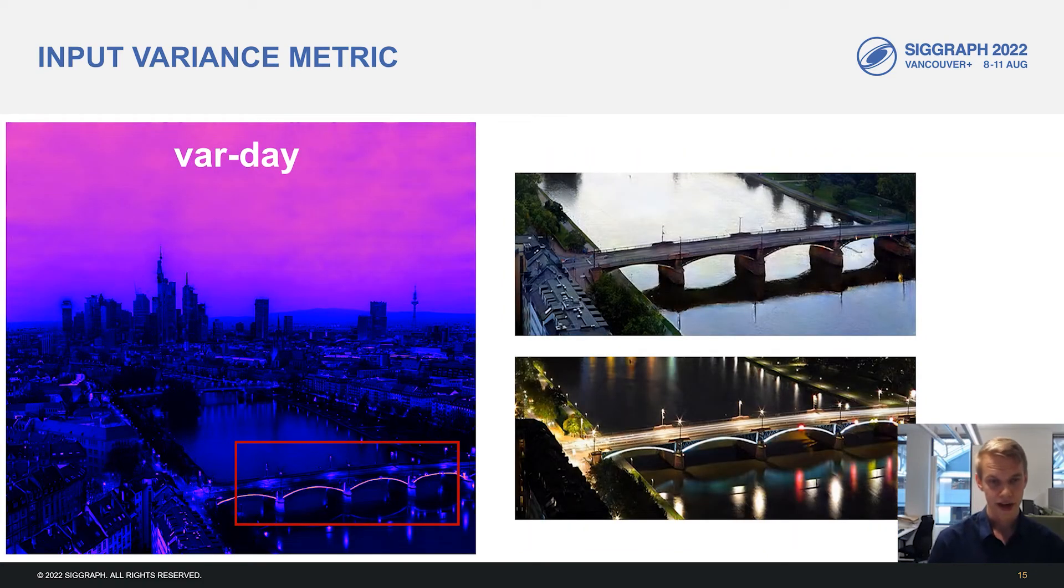The day variance can be seen in the sky, perhaps as expected. But we also see the bottom bridge being highlighted. And this is due to strong lights on the bridge that turn on during nighttime.